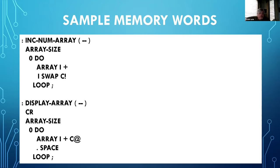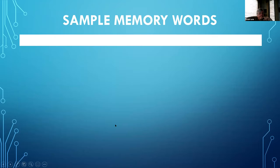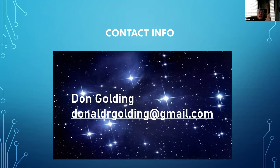I also made a DISPLAY-ARRAY word: a carriage return, then an array-size DO loop that reads each cell with C@ and prints the number followed by a space, showing all values. That's basically the first course. This gives you something to play with when you get your board up and running.